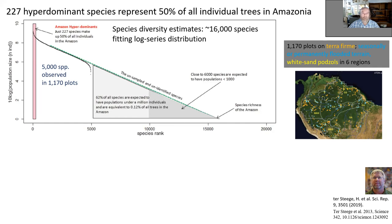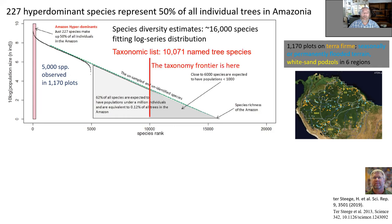They observed about 5,000 species, and this is the actual empirical distribution from most to least common. You expand this line, which fits the log-series distribution, and you get about 16,000 species, where the last 6,000 of the least common ones will have populations of less than 1,000 individuals per species. Interestingly, this can be compared with the independently assembled list of all taxonomically described tree species in the Amazon, which is 10,071 names long. We are pretty much done with the more common species and have this tail of rare species still to describe — about two thirds of existing tree species in the Amazon are already described.